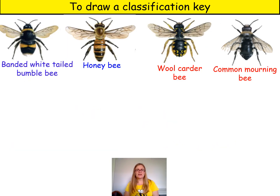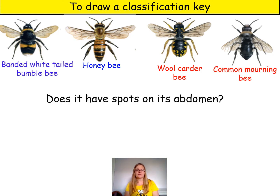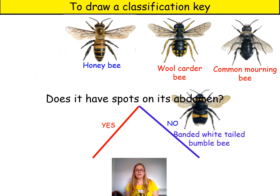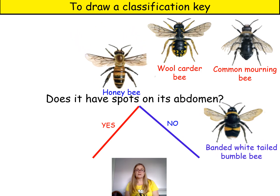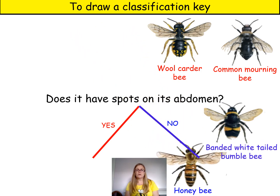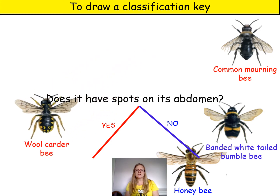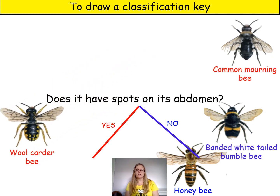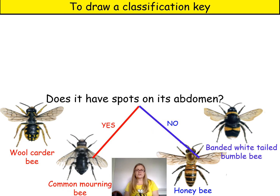Now I'm going to try making a classification key for four bees. First I need to think of a question that separates the bees into the two groups I started with before. I could ask: does it have spots on its abdomen? The banded white-tailed bumblebee doesn't — it has stripes, so no. The honeybee also has stripes, so no. The wool carder bee does have spots, so yes. So does the common mourning bee. So my question has separated the bees into two different groups.